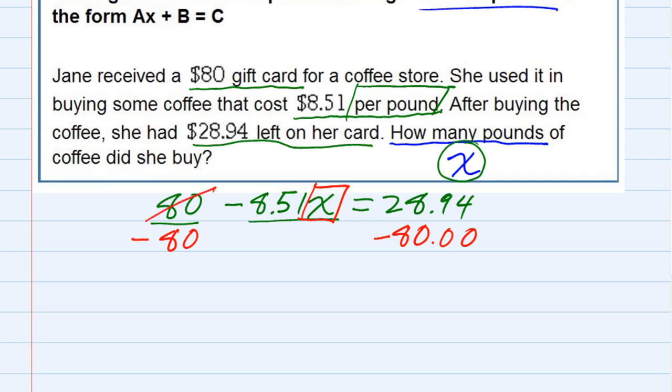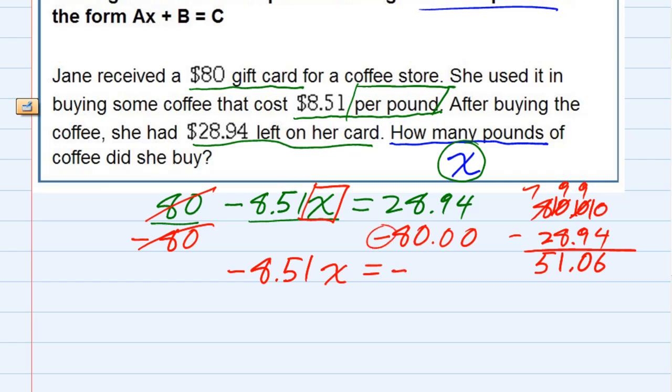On the left-hand side, those 80s cancel, leaving just -8.51x. On the right-hand side, I need to subtract. I've got it written backwards, so I need to put the bigger one on top: 80 minus 28.94. Doing some borrowing—7 makes that a 10, borrow from there makes the next one a 10—I get 6, 0, 1, and 5. Since the larger one was negative, it's -51.06.